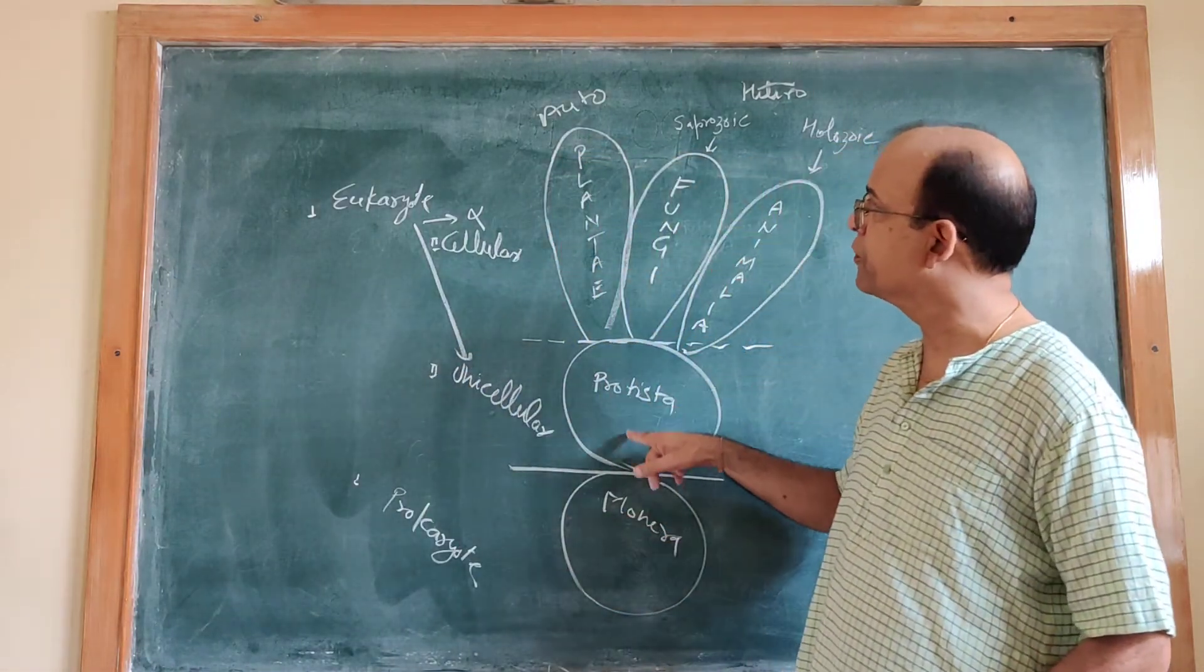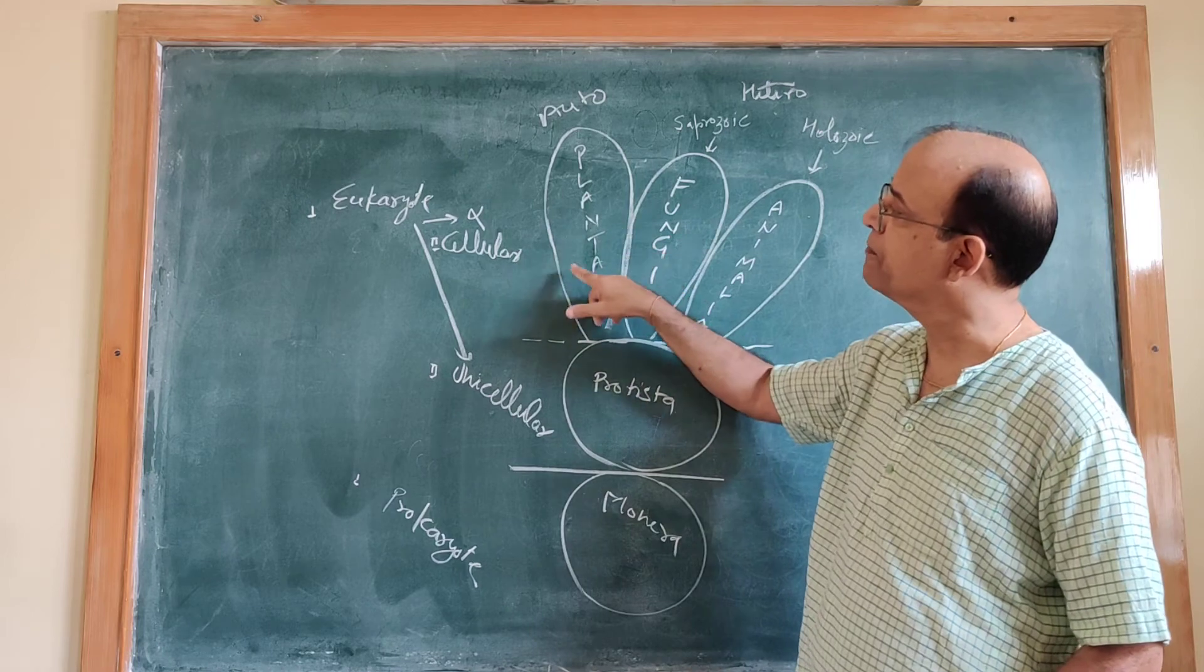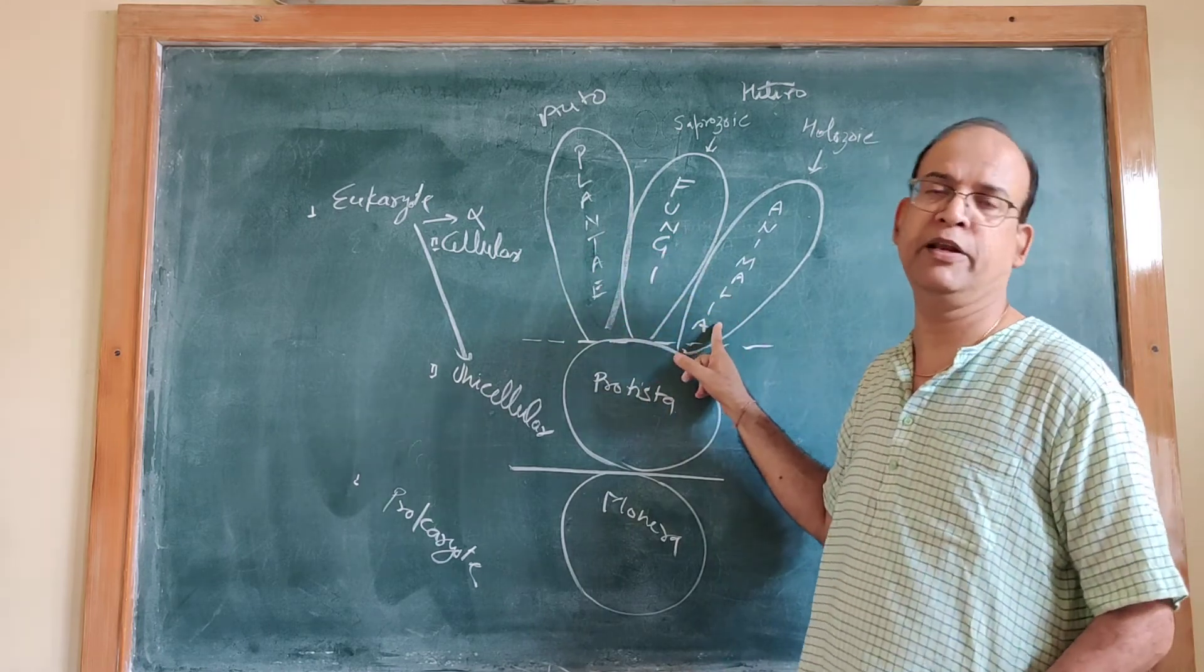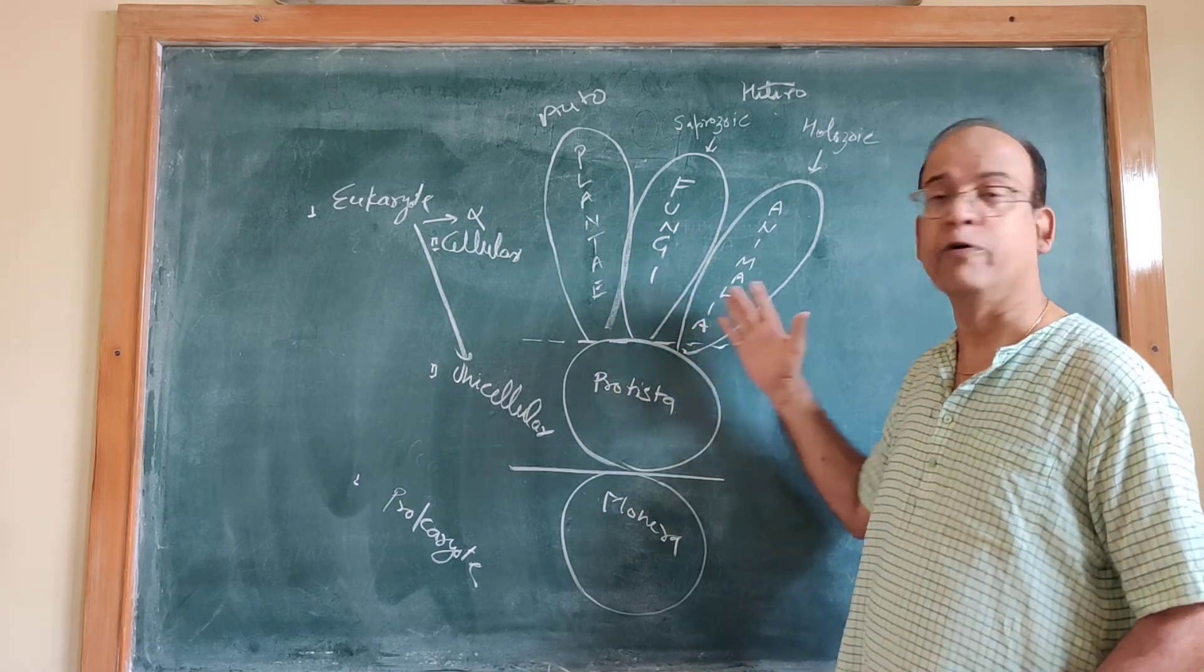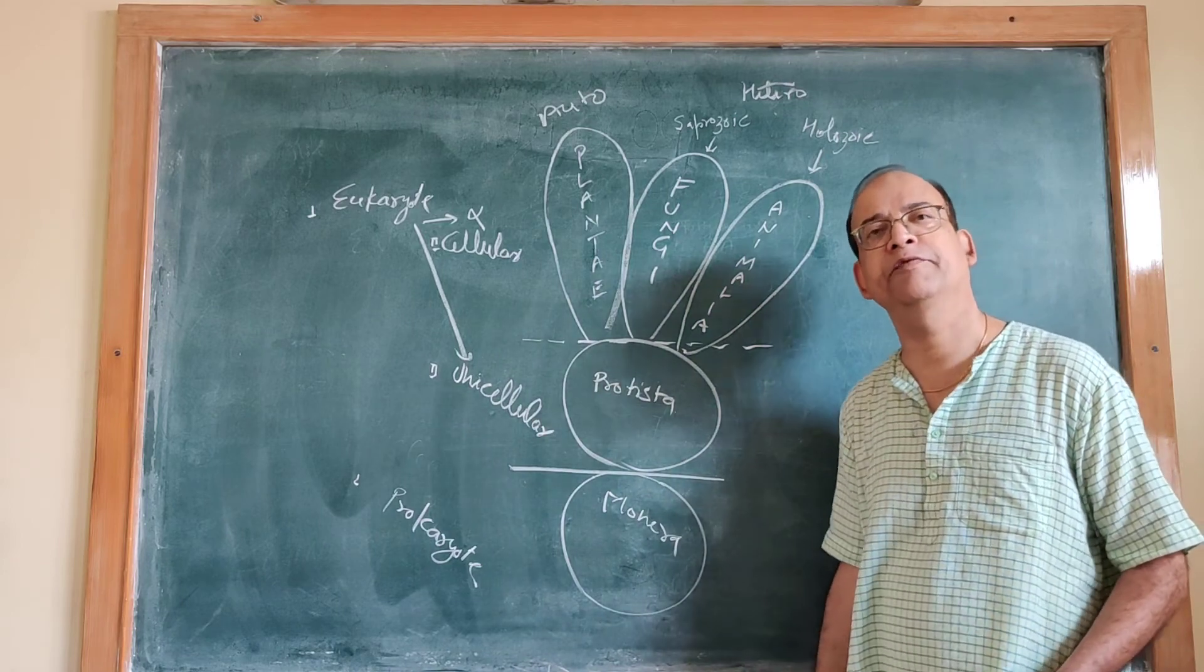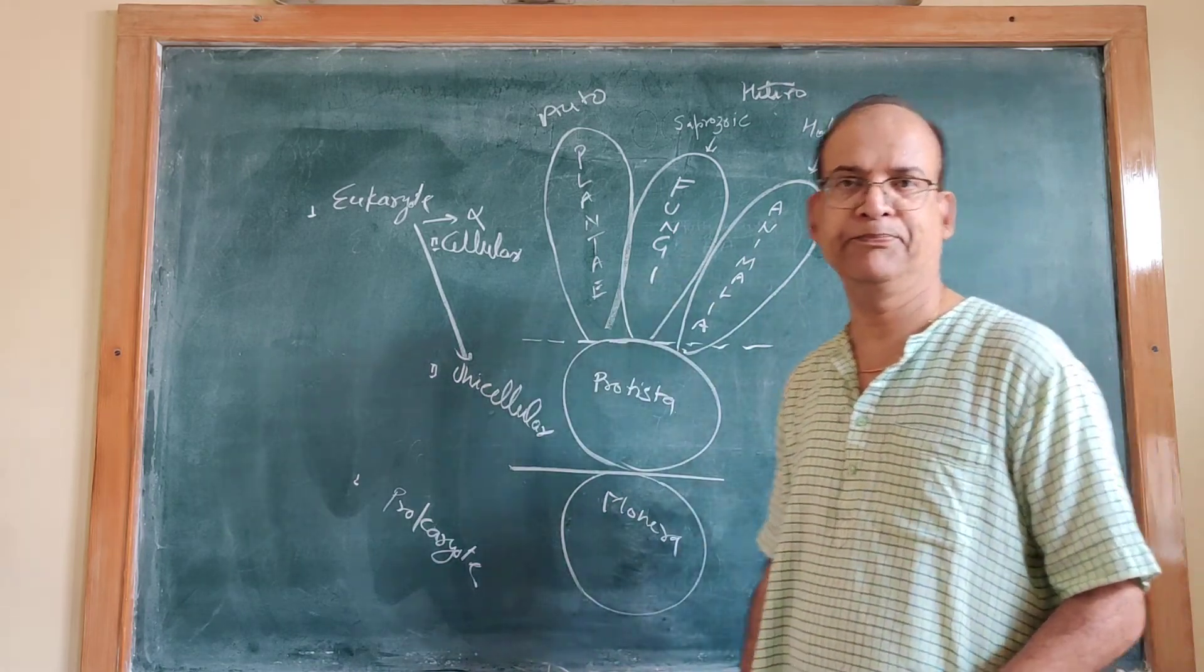Kingdom Monera, Kingdom Protesta, Kingdom Fungi, Kingdom Plantae, Kingdom Animalia. I hope your understanding of this classification system is clearer. Thank you.